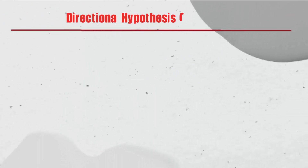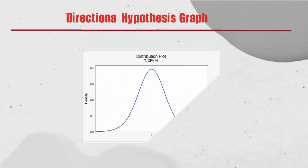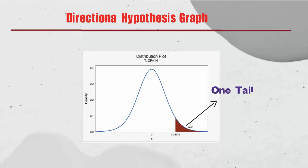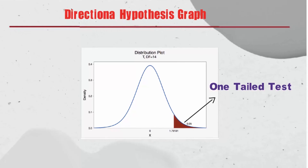We explain directional hypothesis with a graph. Directional tests are also called one-tailed tests. This is because the critical region is in one tail, as shown in the graph. The error is all in one direction — either less than or greater than a central point — not both, as shown in this graph.